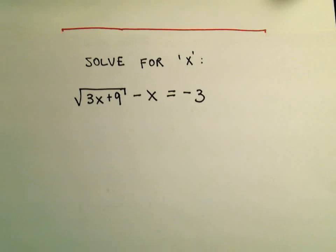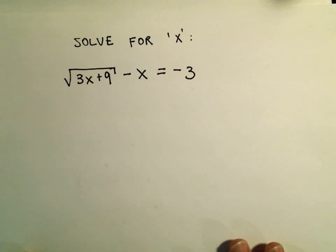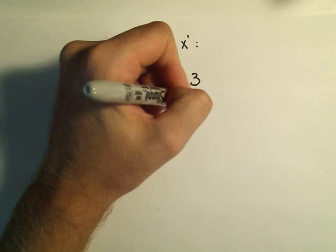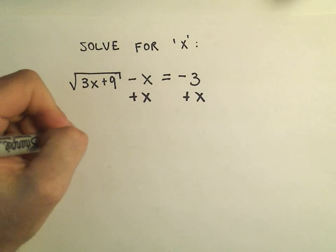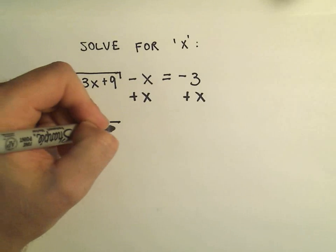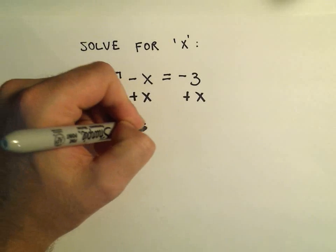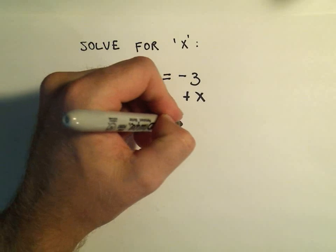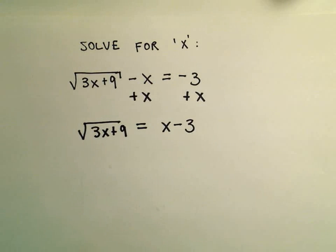So the first thing that I do is I isolate the radical, I get that all by itself. So in this case to do that I'm going to add x to both sides. So we would be left with the square root of 3x plus 9. On the right side I could write negative 3 plus x, but I'm just going to go ahead and write that equivalently as x minus 3.